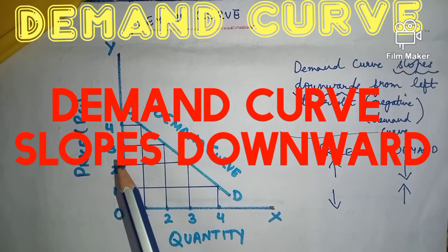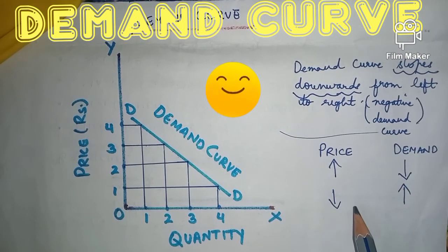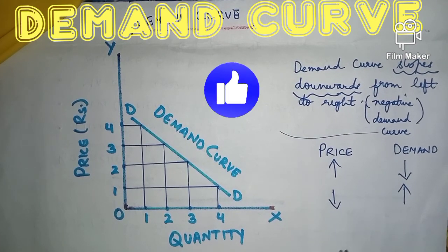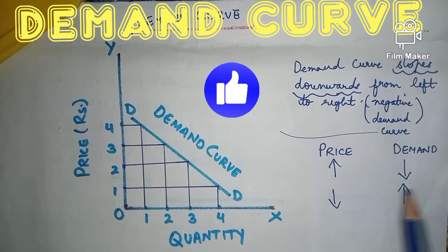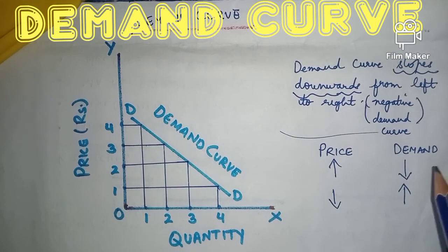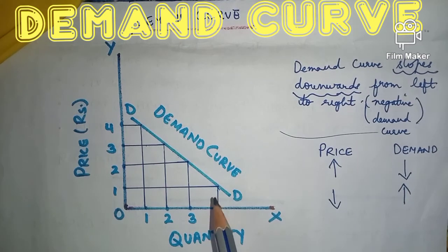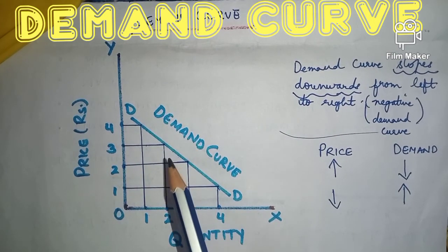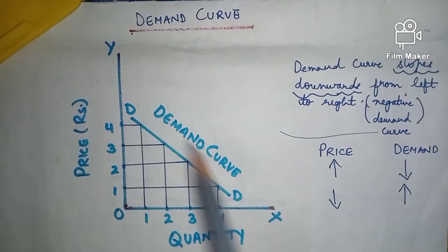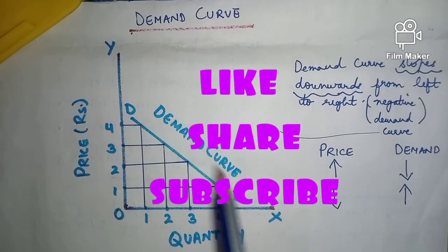When the price is increasing, the quantities demanded are declining. When the prices of the commodities are decreasing, then the demand is increasing. The negative slope of the curve proves the law of demand: at a higher price, demand is less, and at a lower price, demand is more. Demand curve always slopes downwards from left to right.